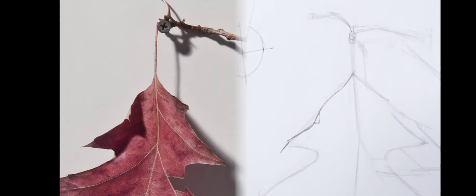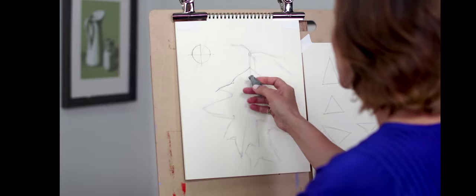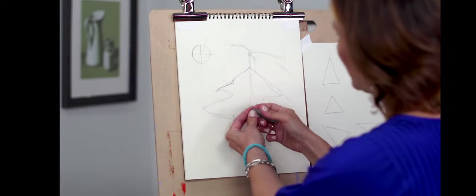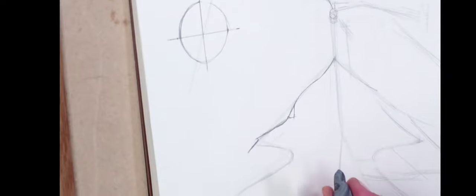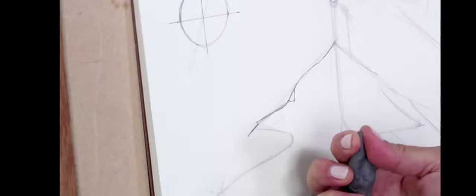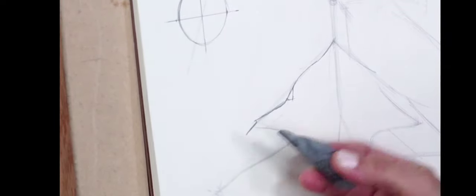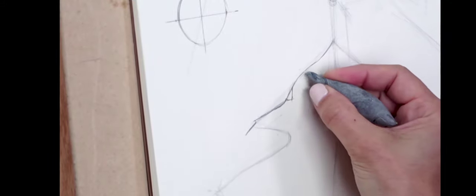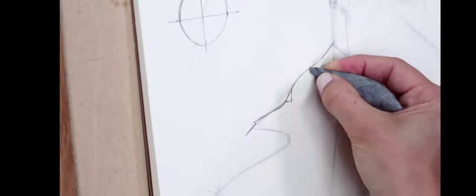Once I've done that, then I'm going to erase out the other lines by using my kneaded eraser. And the reason a kneaded eraser is great is because you can actually shape it. So I've actually kind of rolled my kneaded eraser and made it into almost like a point, a little bit like the pencil. Then I can erase very specifically right up next to the line that I want to keep.